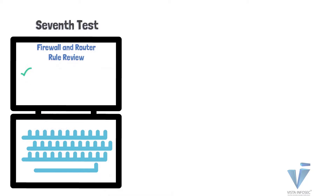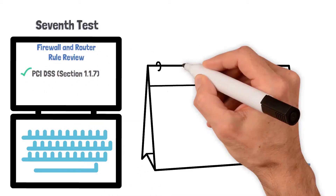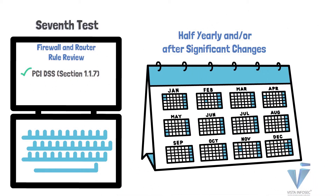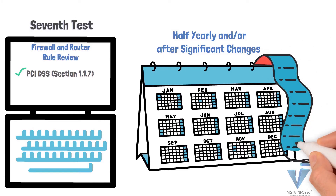Next is the firewall and router rule review under section 1.1.7 of PCI DSS — as you can see on the chart on your screen, this is to be done half-yearly. The rule set in your firewalls, routers, and switches needs to be validated for adequacy at least twice a year. If you are making major changes to your rule set, moving applications up and down, or changing network segregation, you should be doing it again.